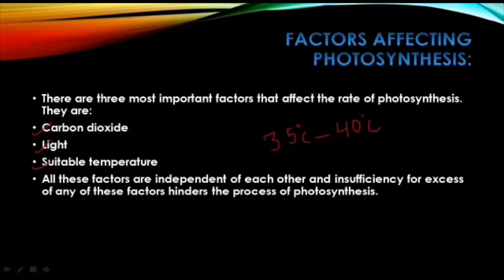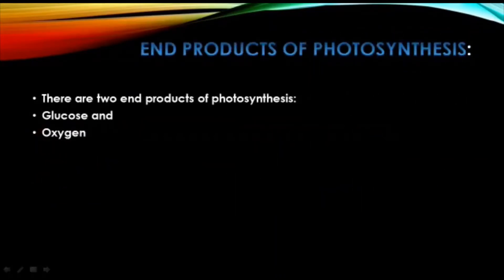All these factors, although independent, have their own independent effect on the rate of photosynthesis, and all of them are very important together. Next, the end products of photosynthesis: there are two end products — one is glucose and the other is oxygen. Oxygen is actually not the main product; it is a byproduct of photosynthesis, produced along with glucose.